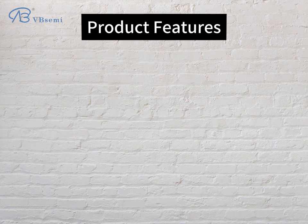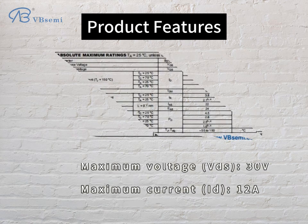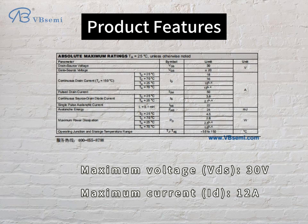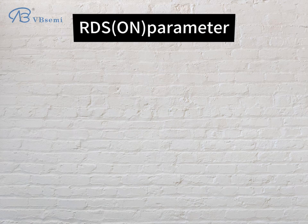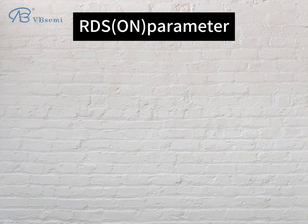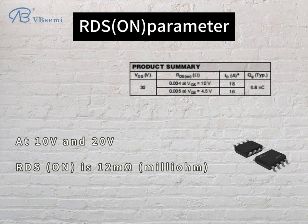Product features: maximum voltage VDS is 30V, maximum current rate is 12A, threshold voltage VTH is 0.8 to 2.5V. RDS-ON parameter at 10V and 20V, RDS-ON is in the milliohm range.